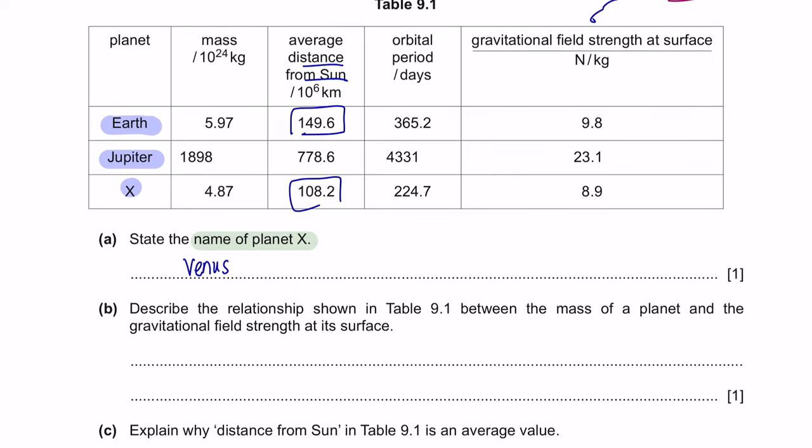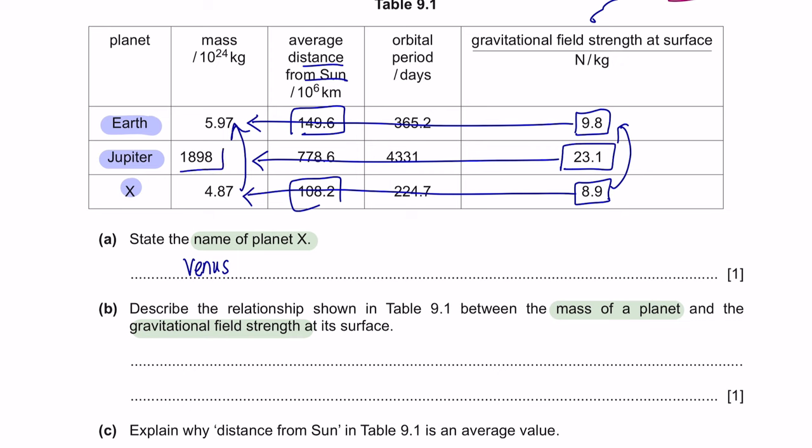Next, describe the relationship shown in table 9.1 between the mass of a planet and the gravitational field strength. At the lowest gravitational field strength, the mass was 4.8. As it increased to 9.8, the mass became 5.97, which increased as well. And when it increased more to 23.1, we can see that the mass became even higher, approximately 2,000. So, the relationship here that we can mention is that the larger the mass of the planet, the larger the gravitational field strength at the surface.